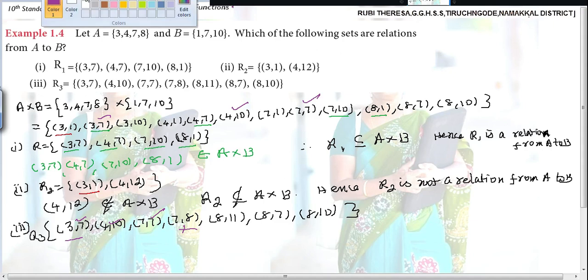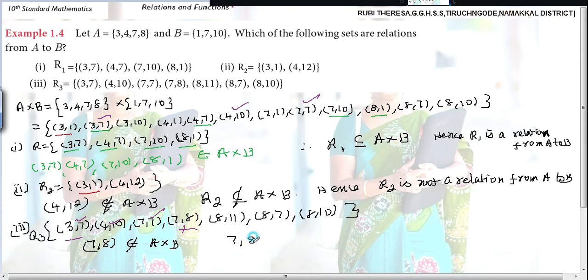So, what can you write? Even though one element does not belong, then it won't be a relation. So, 7,8 is not an element of A cross B. Therefore R3 is not a subset of A cross B. Hence R3 is not a relation from A to B. Because it should be the subset of A cross B.